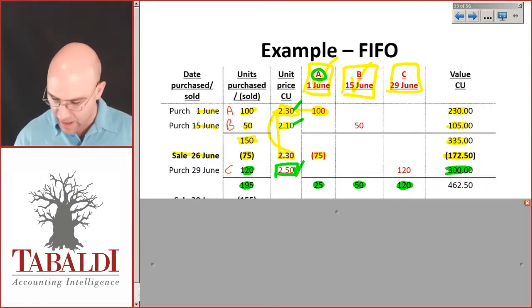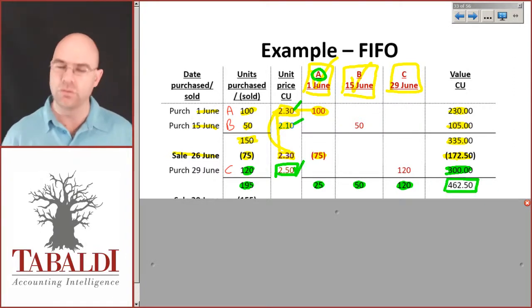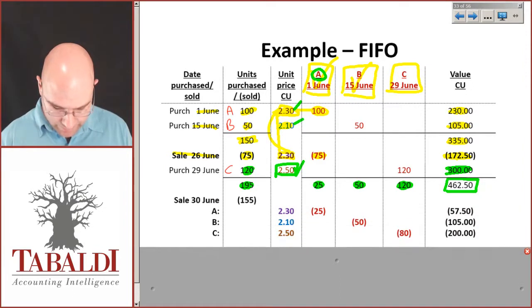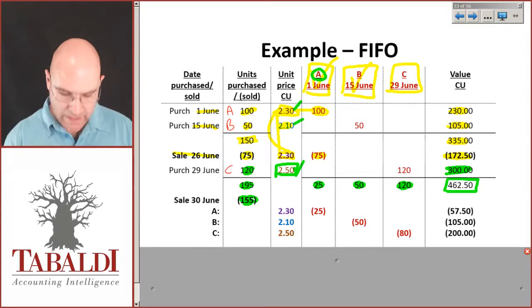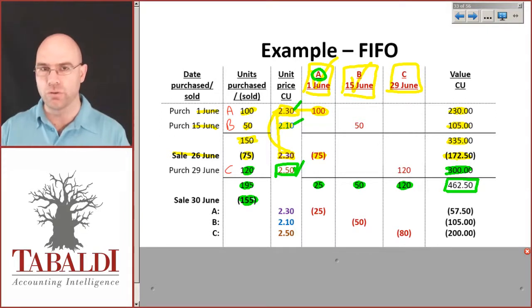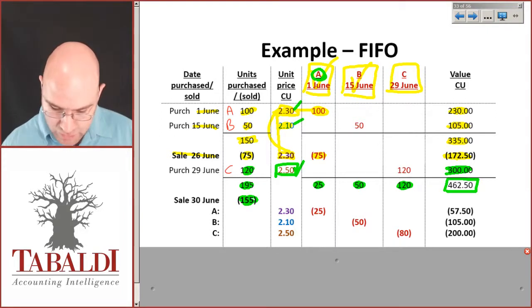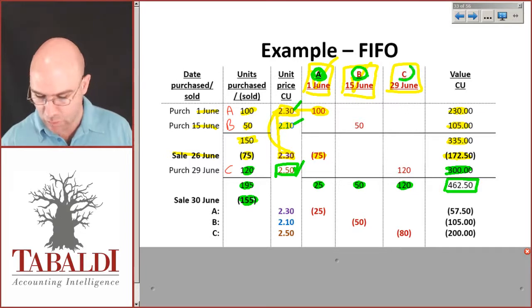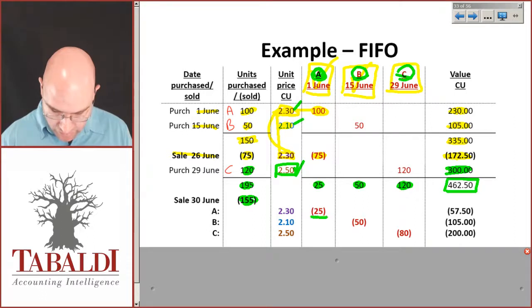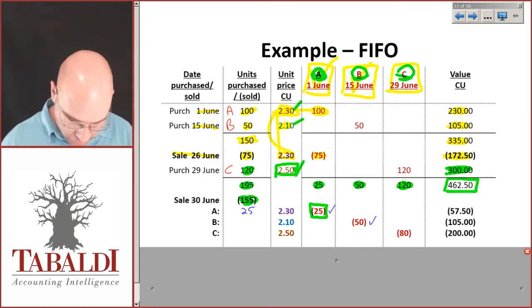Now when I have a big sale and I'm selling 155 items, I must first go through the older inventory and then move towards the newer inventory. So out of that 155, I'm selling the first 25 out of A, then the next 50 will come out of the purchases from the 15th of June.